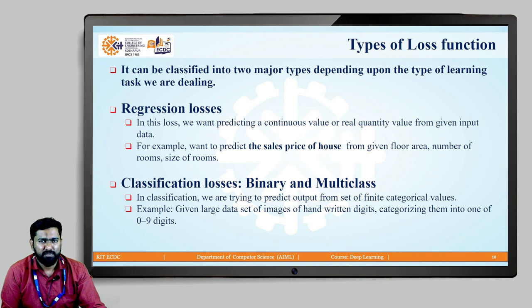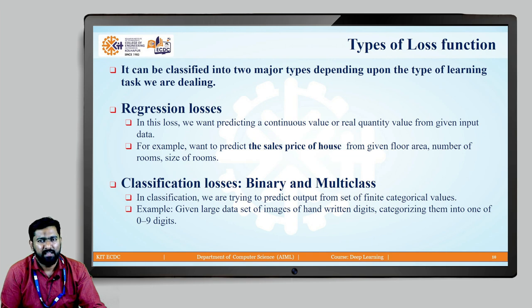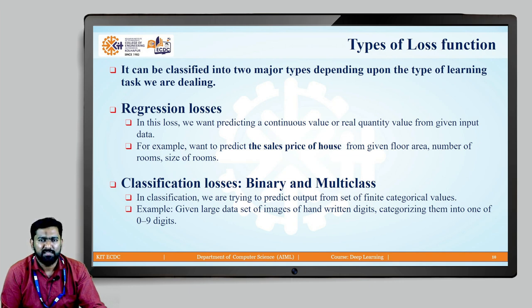There are many different loss functions, but they can be classified into two major types: regression losses and classification losses. In this lesson we will only discuss regression losses. Regression loss is used when we predict a continuous value — for example, predicting the price of a house from its size and number of bedrooms. The output is not zero or one; it is a value like fifteen thousand or twenty-three thousand, so we use a regression loss function.